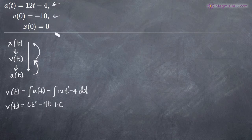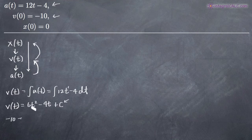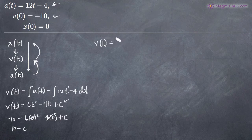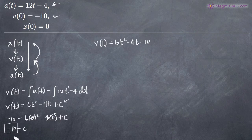Now we can use our initial condition v(0) = -10 to find C and solve for the full velocity function. Plugging in, we get: -10 = 6(0)² - 4(0) + C, which gives us -10 = 0 - 0 + C, so C = -10. That means our velocity function is v(t) = 6t² - 4t - 10.